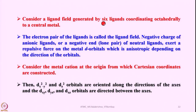It is very appropriate to call crystal field theory as ligand field theory because the electric field is greatly influenced by the ligands approaching the metal ion. Consider a ligand field generated by 6 ligands coordinating octahedrally to a central metal. The electron cloud of the ligands is called the ligand field. The pair of electrons or the negative charge of ionic ligands or the negative end of a neutral ligand exert a repulsive force on the metal d orbitals, which is anisotropic depending on the direction of the orbitals.